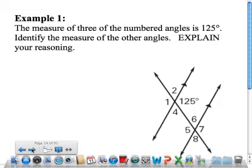Example 1 says the measure of three of the numbered angles is 125 degrees, identify and explain. In other words, we know if this is 125, then the corresponding angle has to be 125 because the lines are parallel.